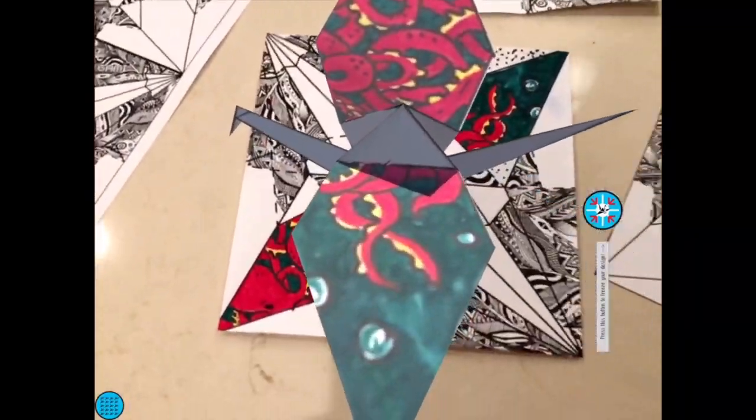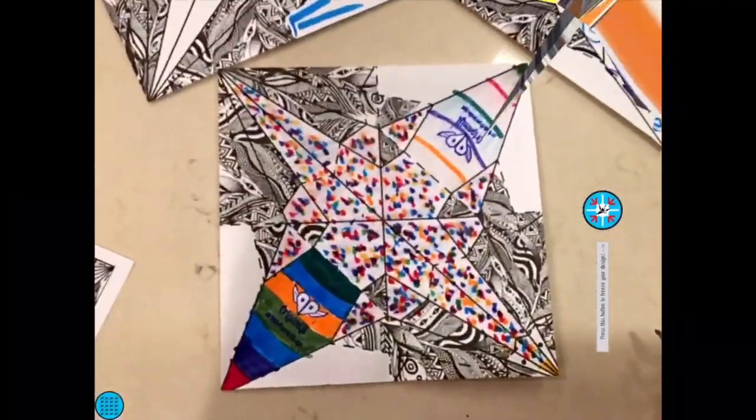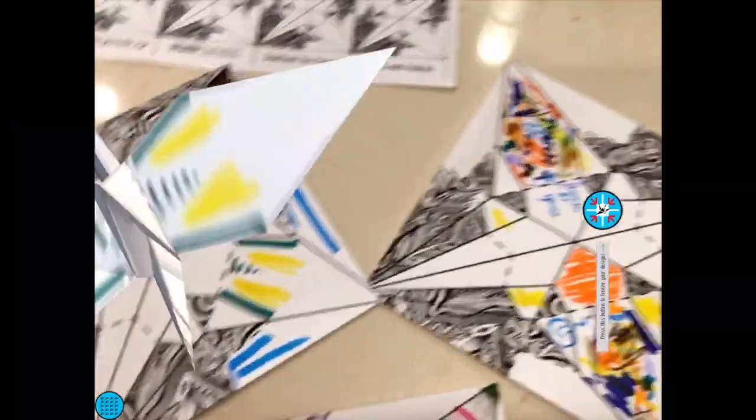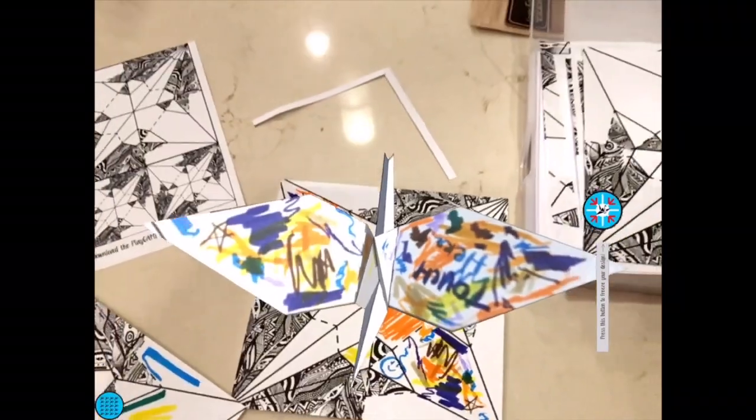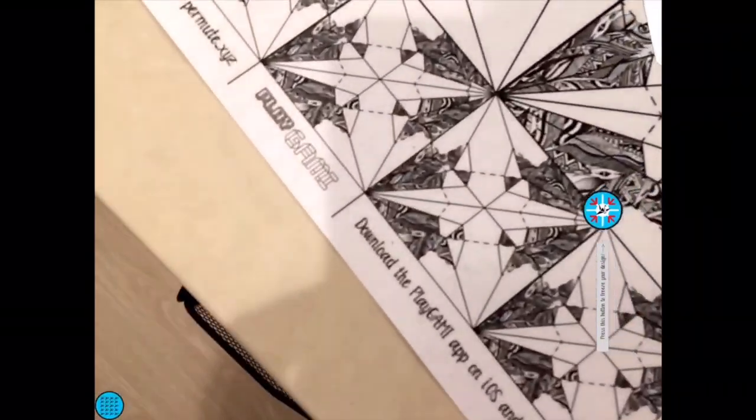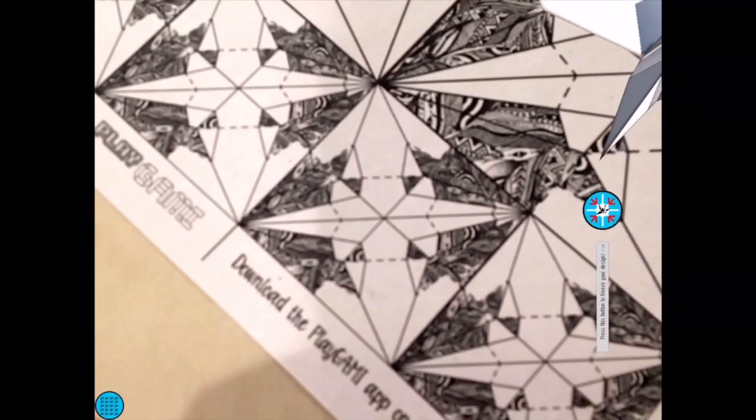Playgami is an augmented reality origami creativity platform. Version 1 lets you draw your designs on real origami paper. Visualize it as you draw on a virtual version of the origami and then turn your hand drawing creation into a game character.